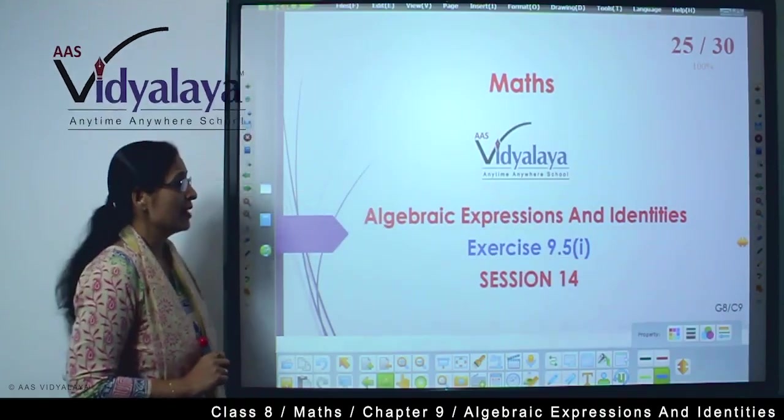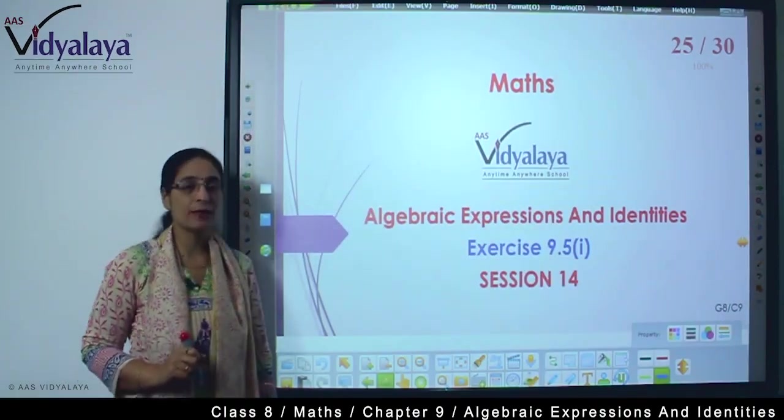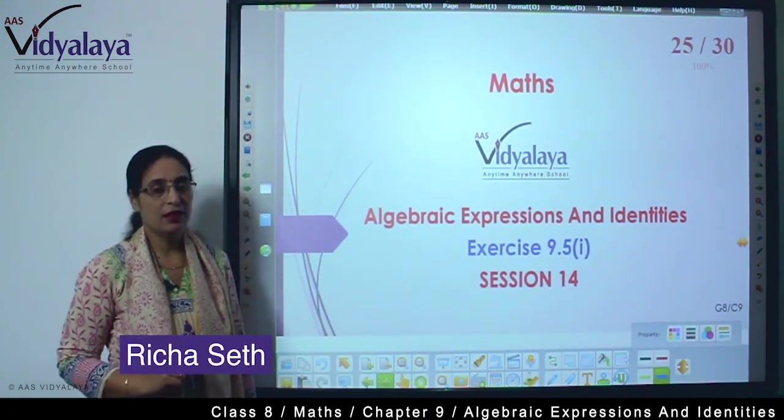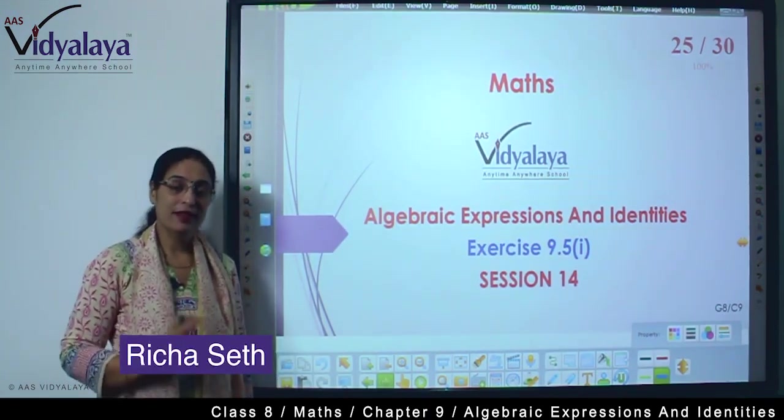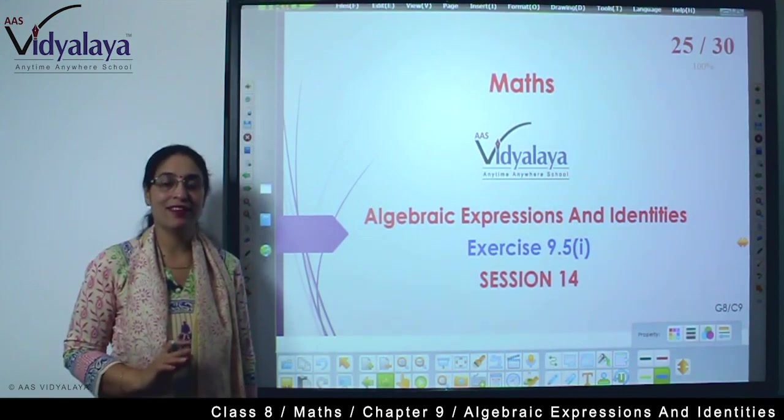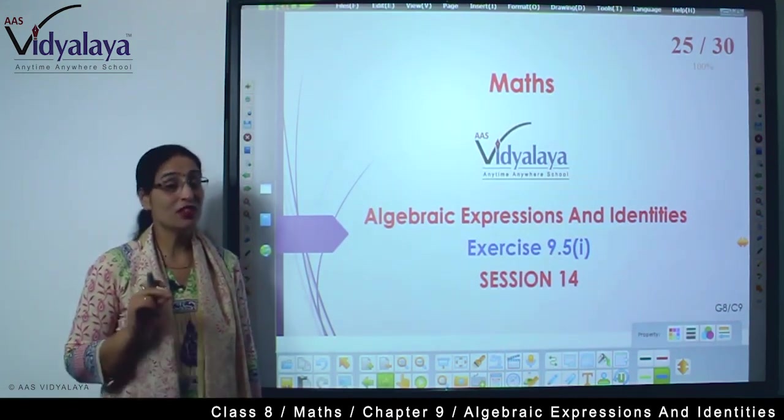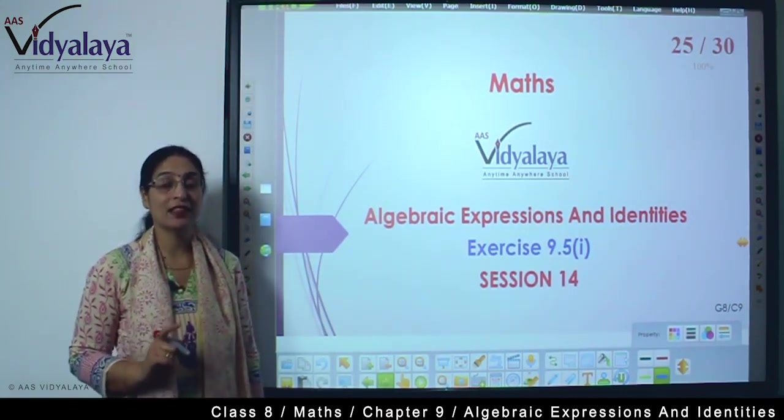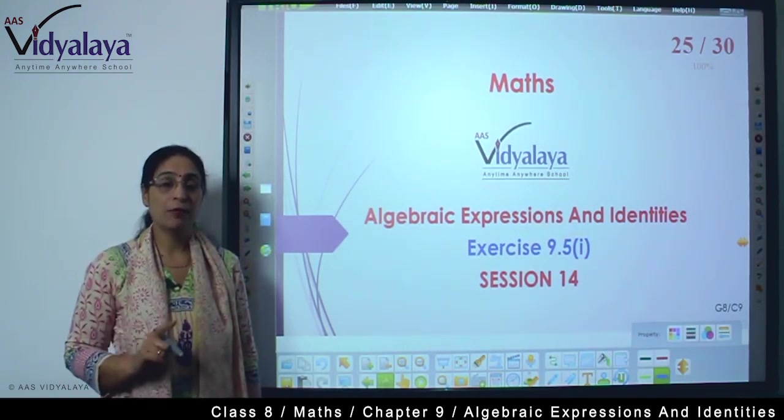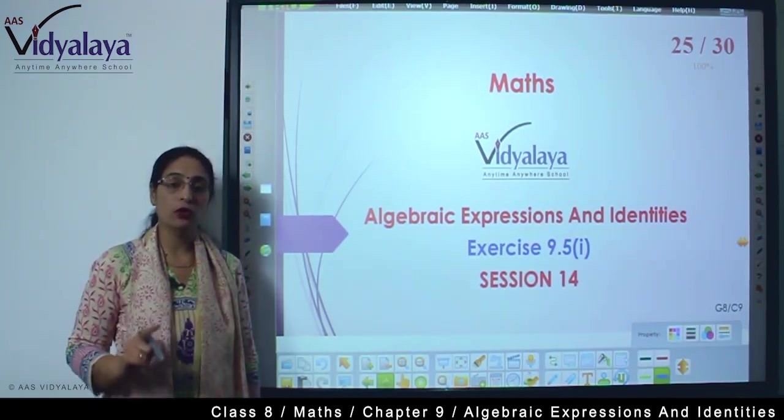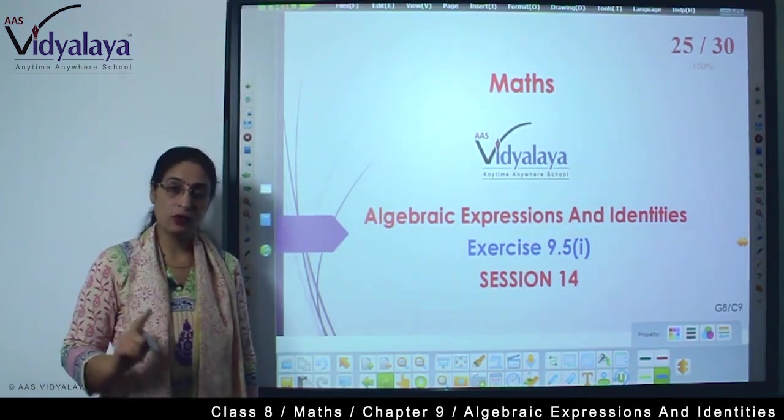Hello kids, welcome to math session. We are doing algebraic expressions and identities. Let's quickly review what identities we learned. The first identity we learned was (a+b)² is equal to a² + 2ab + b².